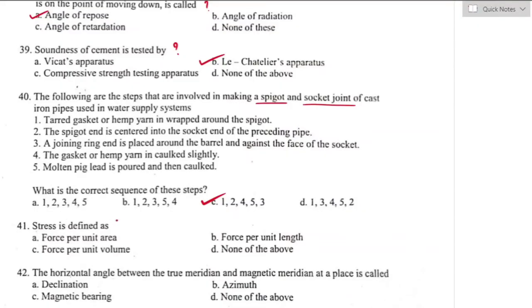Question number forty-one: stress is defined as — stress is the resistance force acting per unit area of the cross section of a body. It is also defined as applied load divided by cross-sectional area, denoted by sigma. Sigma = Load / Area. It is force per unit area. Option A is the right answer.